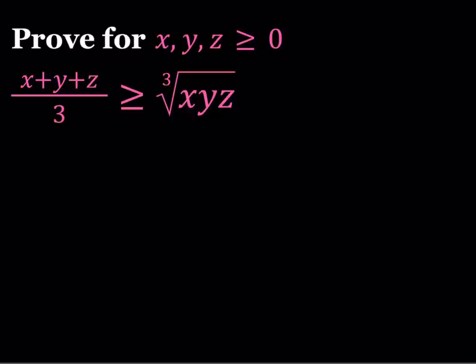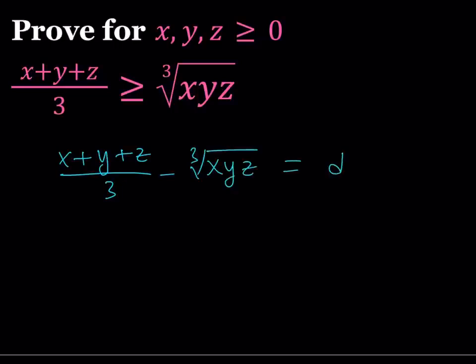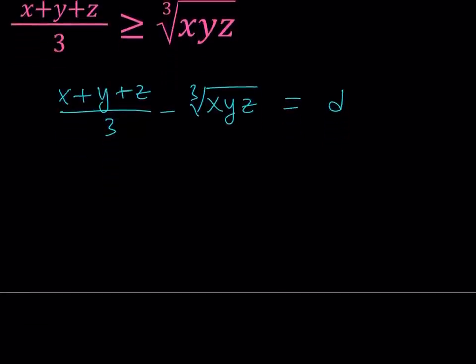Let's get started. When trying to prove an inequality there are a couple of different ways to go about it. You can start with a well-known inequality and use it to prove the given one, or you can use different approaches. What I'm going to do here is subtract these two expressions and write D for difference, equal to X plus Y plus Z over three minus the cube root of XYZ. If I can prove that this difference is greater than or equal to zero, that implies the given inequality.